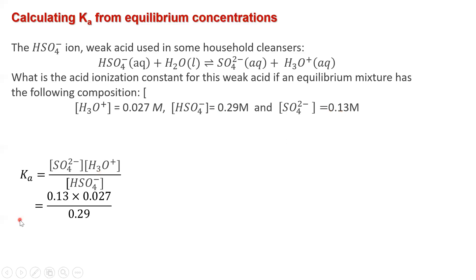We're going to plug in 0.13 for sulfate, 0.027 for hydronium, and 0.29 for the hydrogen sulfate ion. Now it's just a plug-and-chug. You can leave it as 0.012, but since the numbers become pretty small, we tend to write them in scientific notation — 1.2×10⁻² is a better way to write that answer. This is very similar to what we did in the last chapter with general equilibrium problems; the only difference is one reactant is an acid and the other is water.